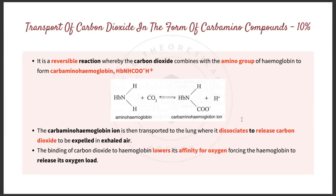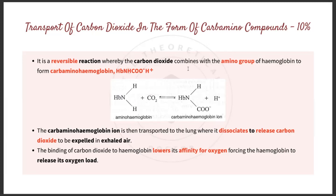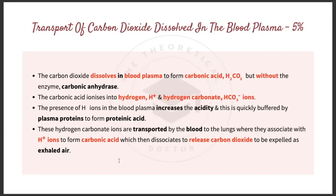For the 10% carbamino compound route: carbon dioxide combines reversibly with the amino group of hemoglobin to form carbaminohemoglobin. This is then transported to the lungs, where it dissociates back into carbon dioxide and hemoglobin, and the carbon dioxide is released. Notably, the binding of carbon dioxide to hemoglobin lowers its affinity for oxygen, forcing hemoglobin to release its oxygen load.